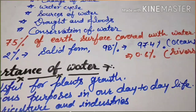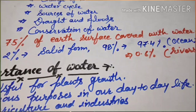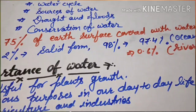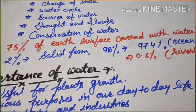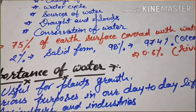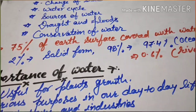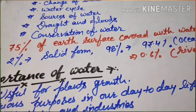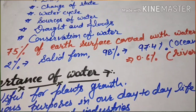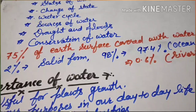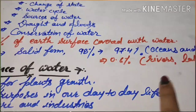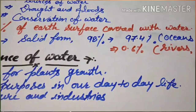About 75 percent of the earth's surface is covered with water. Of this, 2 percent is in solid form like snow. Of the remaining 98 percent, 97.4 percent is available in oceans and seas, and only 0.6 percent is available in rivers, lakes, and ponds.